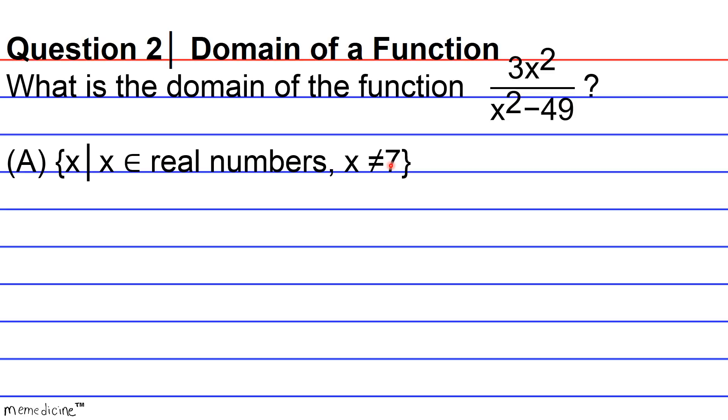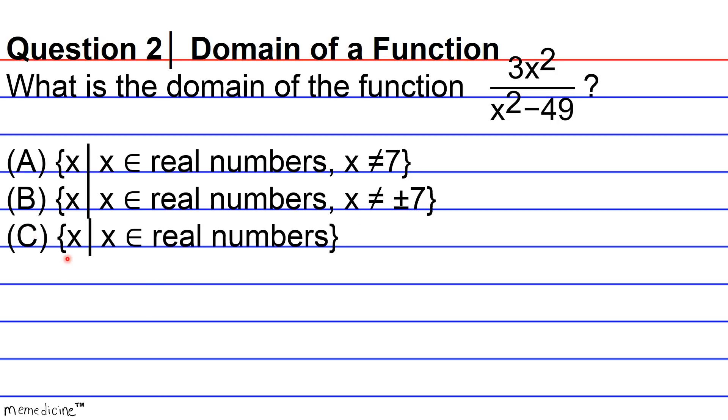The condition is x is not equivalent to 7. All right, so that's how this is read, and you'll get more practice by seeing the rest of the answer choices. Or is it going to be B, the set of all x's such that x is an element, or is a member of, real numbers, such that x is not equivalent to positive or negative 7?